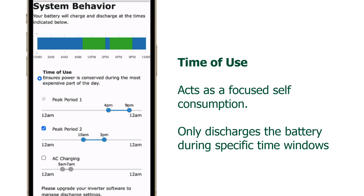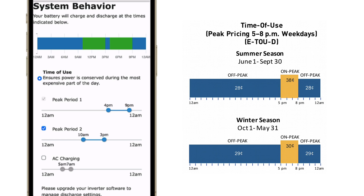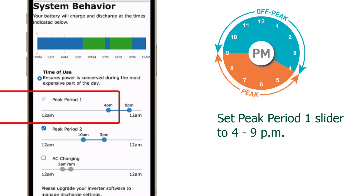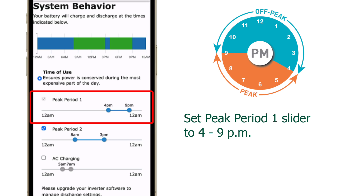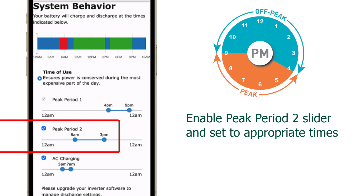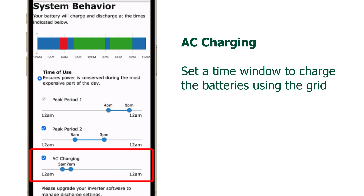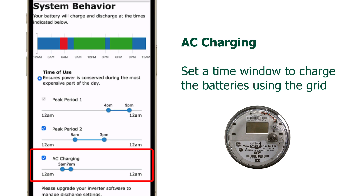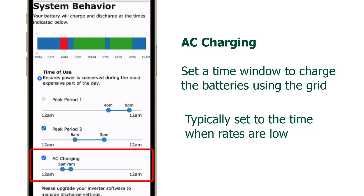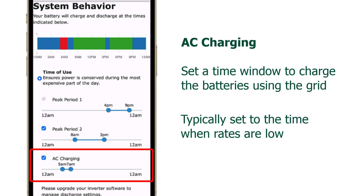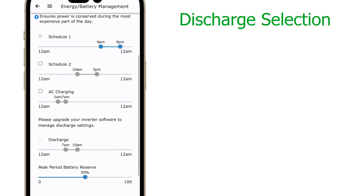The last operating mode is Time of Use (TOU). This mode is a focused self-consumption, meaning it will only discharge the batteries during a certain period or window based on your utility rate structure that contains the peak rates. For example, if your utility has a peak rate window from 4 to 9 PM, you can use the sliders to create that window. Some utilities have multiple windows for mid or low peak periods — use the peak period 2 slider to set this window. The last slider allows you to set a grid charging window.